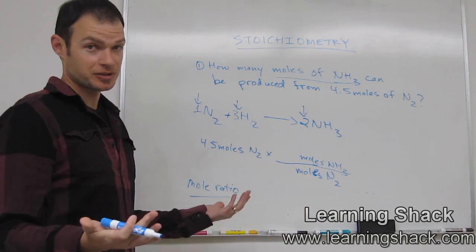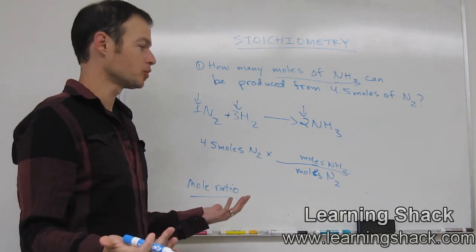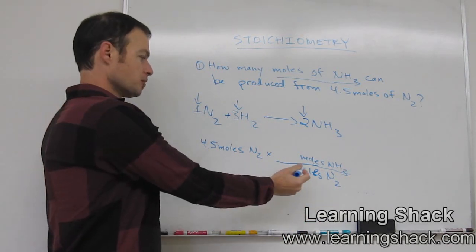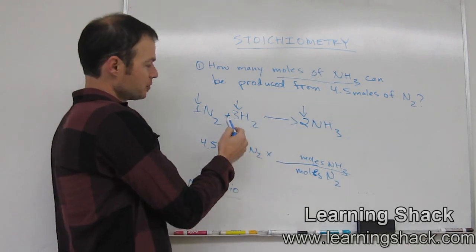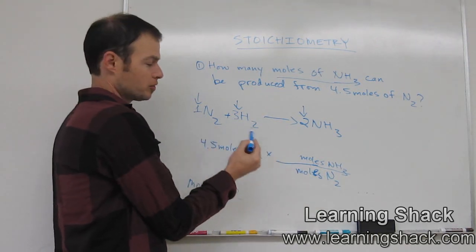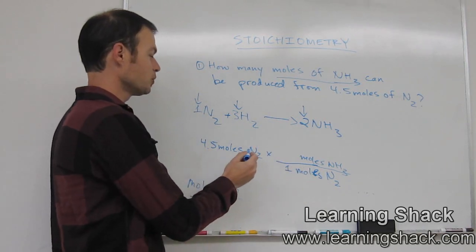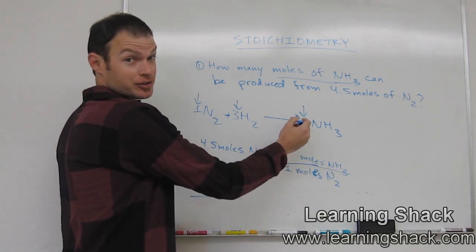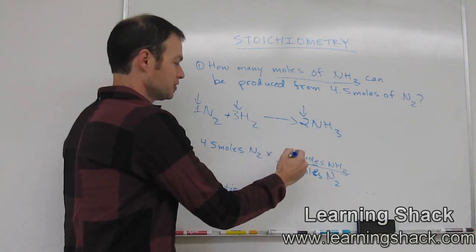Now what we want to do is we want to use our mole ratio. So what is our mole ratio? Well, here we have N2. The mole ratio comes from this balanced equation we have. So moles of N2, we have one mole of N2, so we write that down here. And how many moles of NH3 do we have? We have two, again, from the balanced equation.